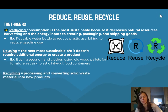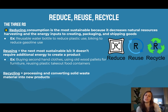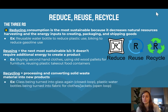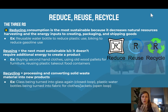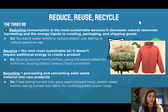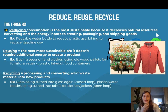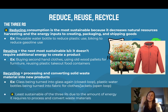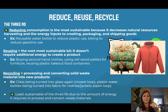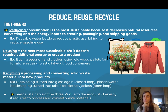The third R is recycling — the process where we process and convert solid waste materials into new products. An example is glass being turned into glass again, known as a closed loop, or plastic water bottles being turned into fabric for clothes and jackets, known as an open loop system. Recycling is actually the least sustainable of the three R's.